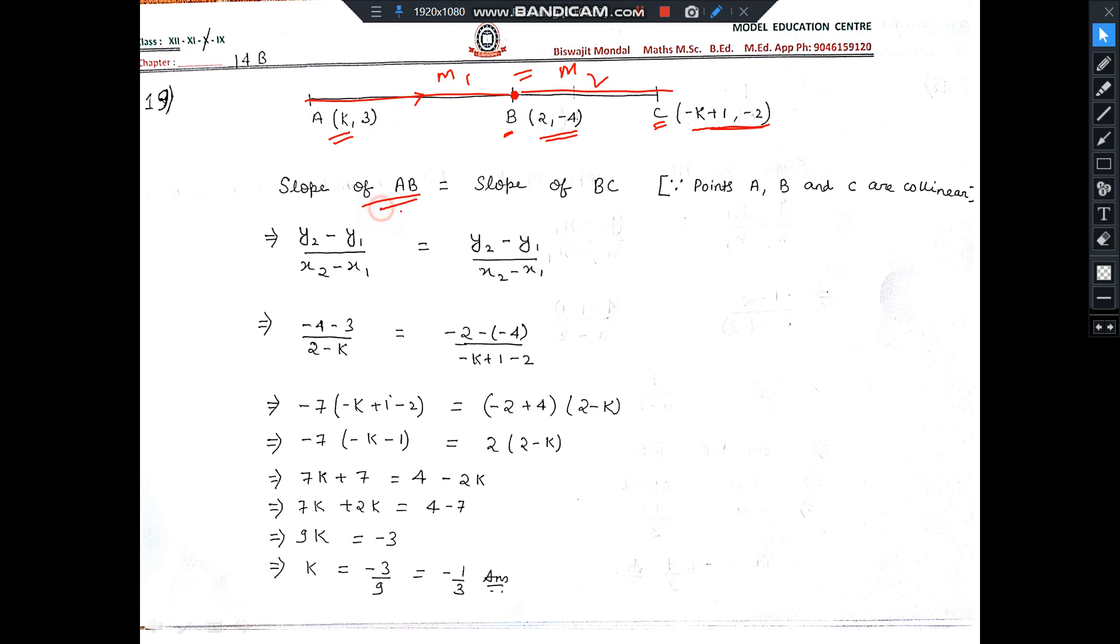First you find the slope of AB. Let's say this is M1. The formula is y2 minus y1 by x2 minus x1. So this is x1, y1, x2, y2. Put the value and get the slope.